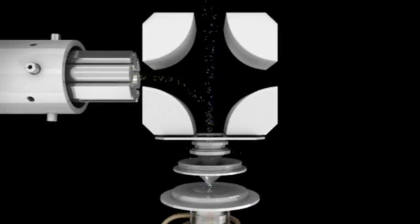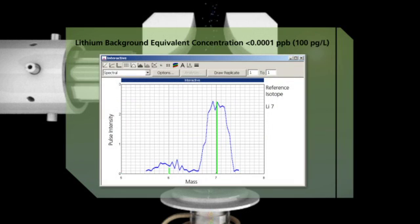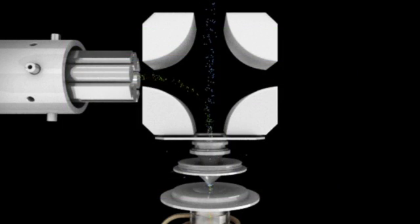Ions pass from this unique triple cone interface into the quadrupole ion deflector. The first of three quadrupoles in the instrument, the ion deflector turns the ion beam 90 degrees before it enters the patented universal cell and analyzing quadrupole, providing unparalleled stability and reducing background and interferences for the most accurate results.